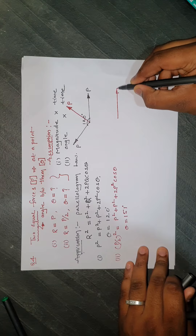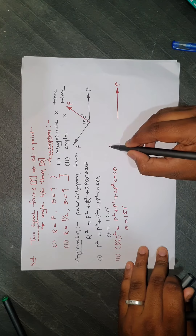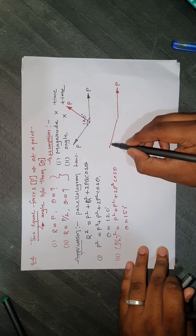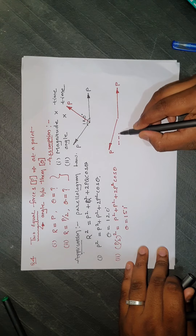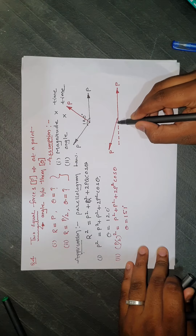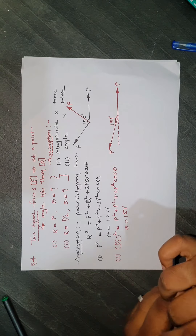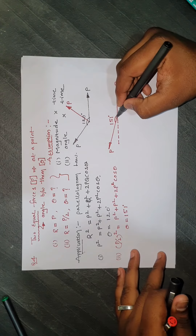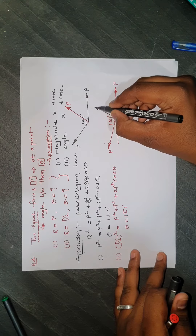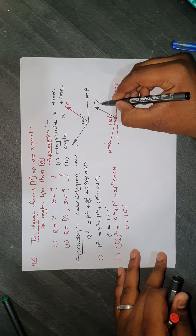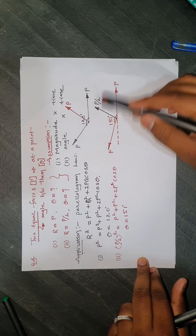In the diagrammatic representation for the second case, one force has magnitude P and the other also has magnitude P, with the angle between them equal to 151 degrees. The resultant falls in between these two forces with magnitude P/2.